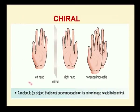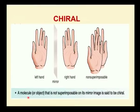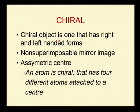Chiral means, in the Greek word, it means handedness, which means both left hand and right hand are not superimposable. As shown in the picture, the left hand placed next to a mirror produces the right hand — both are non-superimposable mirror images. The first important point: a molecule or object that is not superimposable on its mirror image is said to be chiral. A chiral object has right and left-handed forms, forms non-superimposable mirror images, and should have an asymmetric centre.